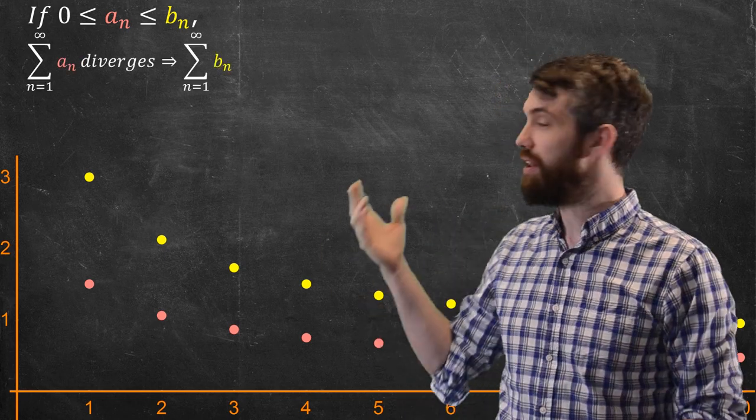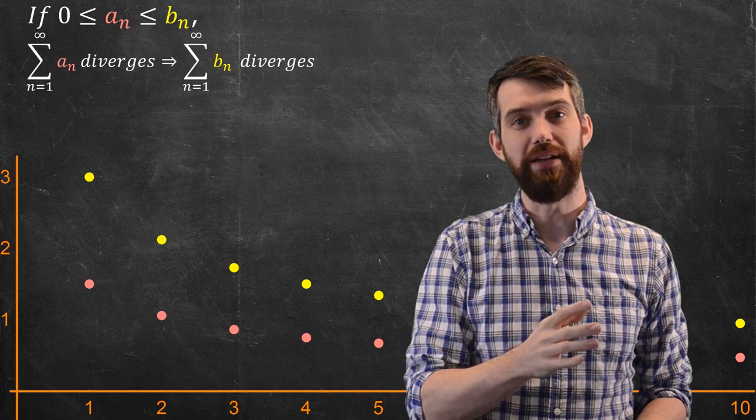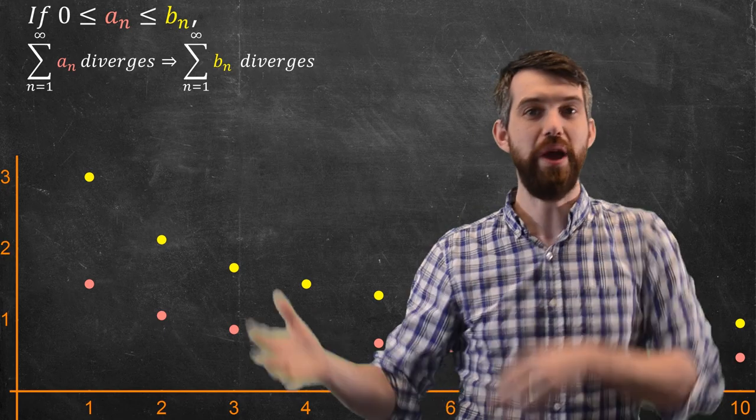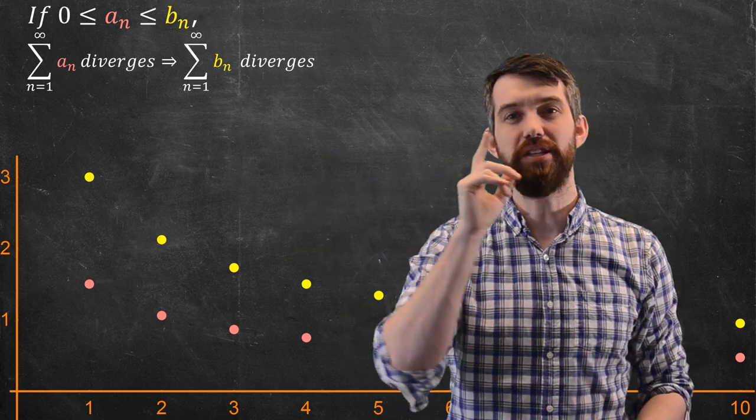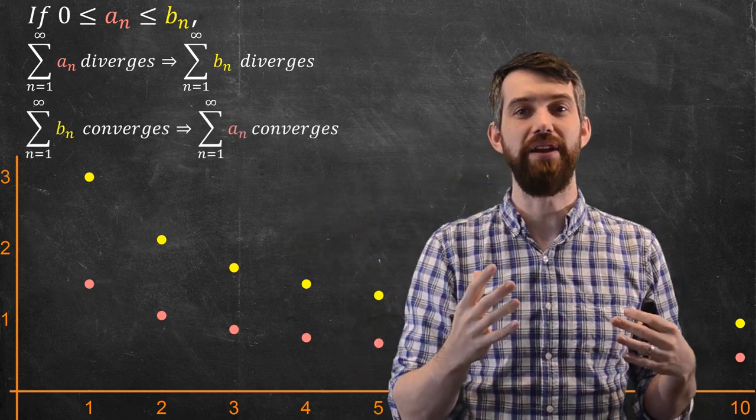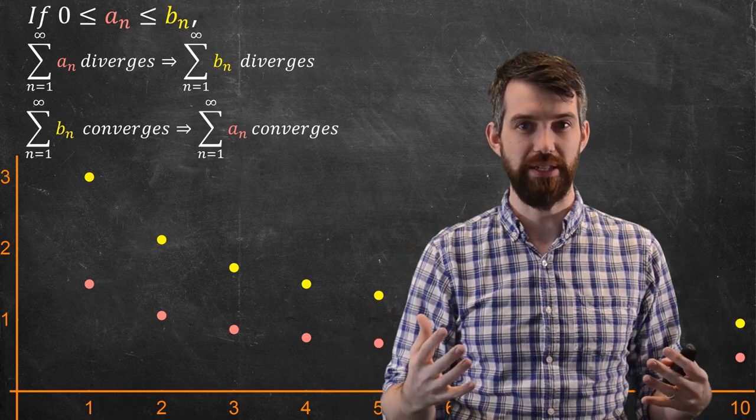The other way around is that if the bigger series, if the BN, if that converges, then the smaller series, the AN, is going to converge as well. This is the comparison test.